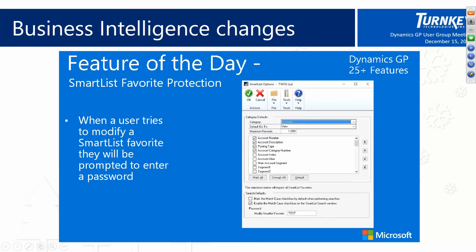The first feature to talk about is a business intelligence change — the ability to put a password on your SmartList favorites. If you've ever had anybody go in and start working with a SmartList in the system and they made a change to it that broke it for everybody else, you can now put a password that requires someone before they can go into a SmartList favorite and modify it. Anytime they go in and try to hit that modify button, it pops up and asks for the password.